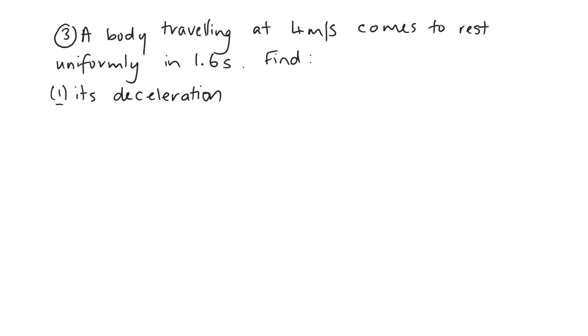Example three, a body traveling at 4 meters per second comes to rest uniformly in 1.6 seconds. Find its deceleration. So again, let's start U, V, A, S, T. So it starts at 4 meters per second. So that's its initial velocity. It comes to rest. That means it stops. So V is zero. And that's 1.6 seconds.